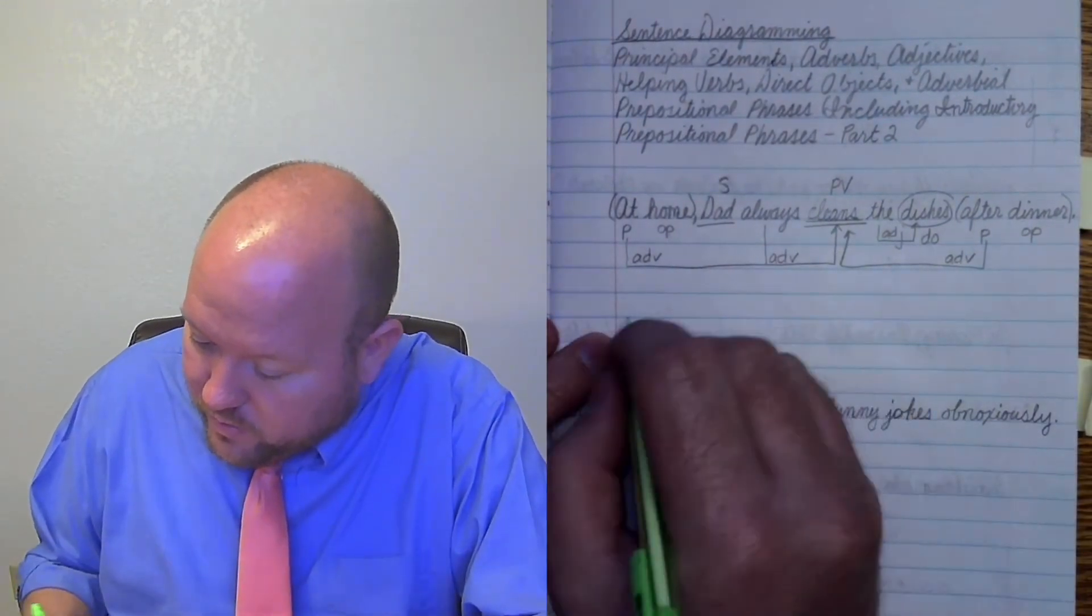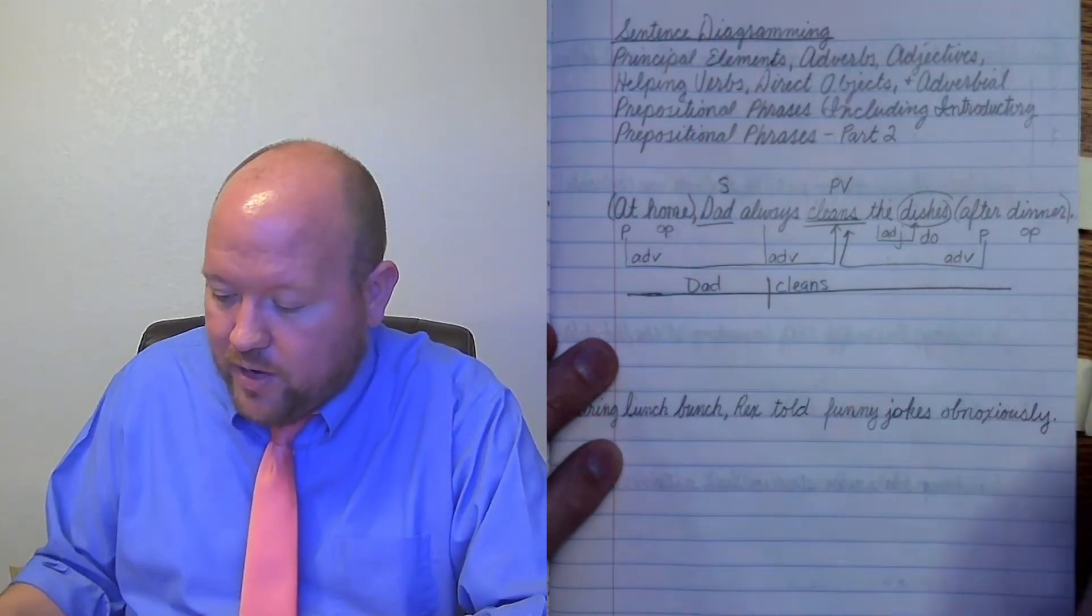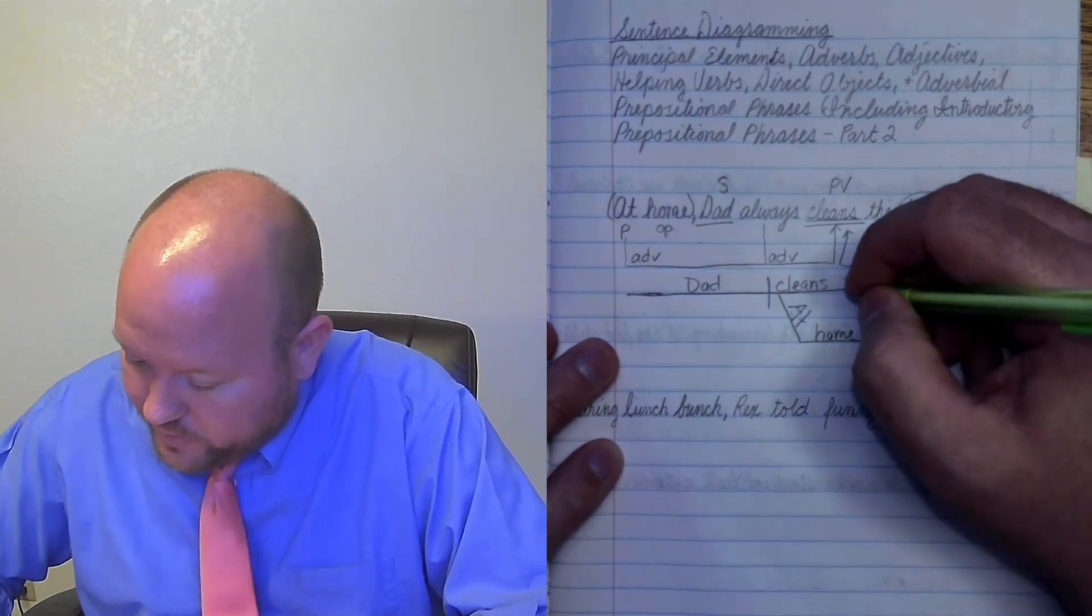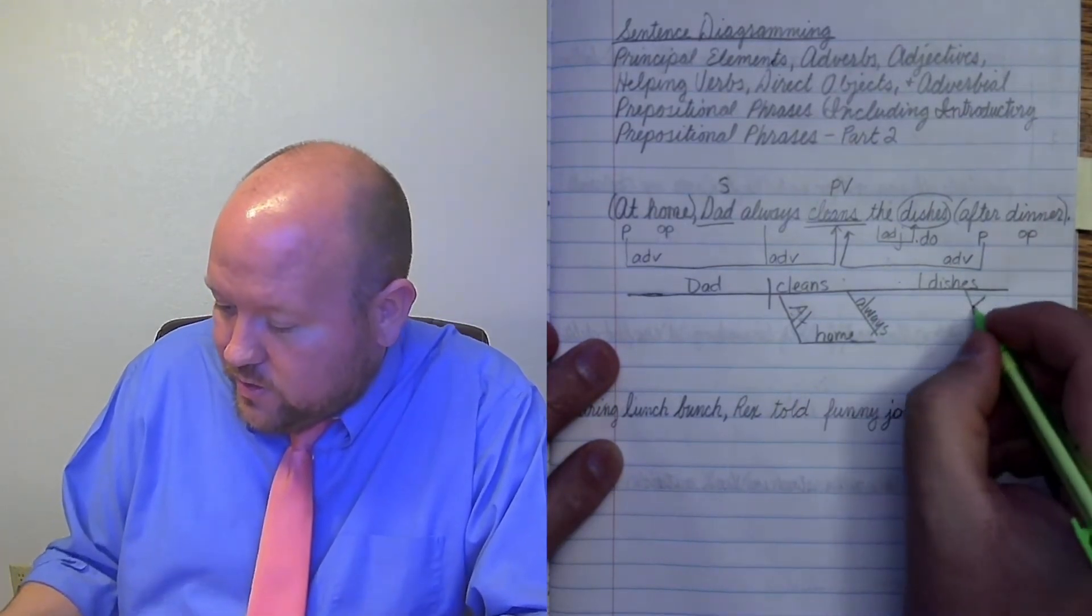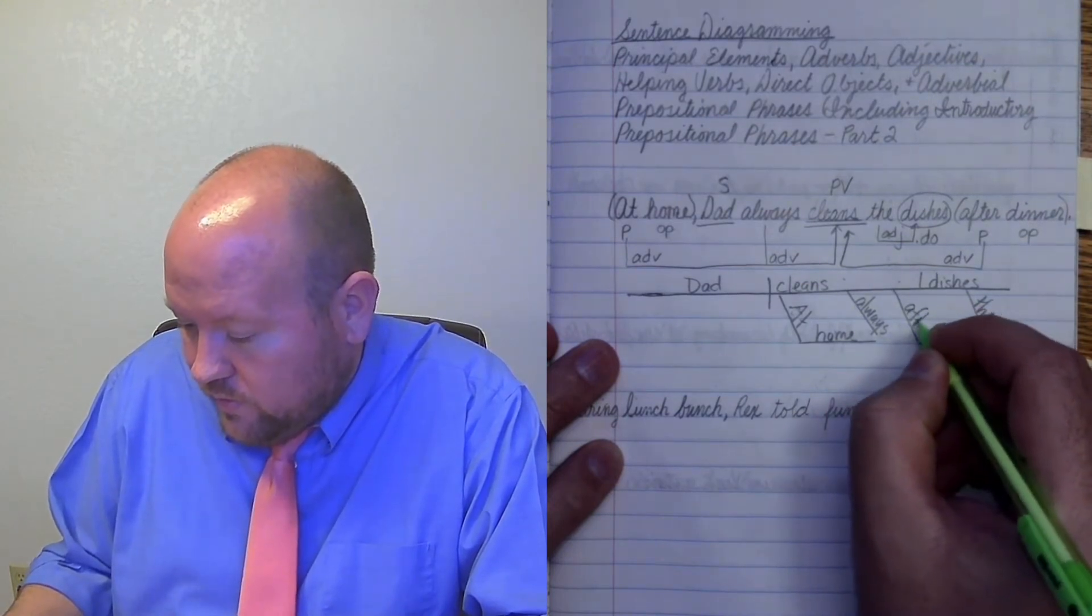Now let's diagram this. So I'm going to go right here just so I have plenty of space to make my diagram. Going to put my line here. So here we have cleans is the verb. Dad is the subject. Dad's capitalized because I'm using it as a proper noun and he cleans what dishes. At home is where he does it. So I'm going to put at home and it needs to be capitalized because it's capitalized in my sentence at home. Dad always. So he always does the dishes. So I'm gonna do this here, but always. Which dishes? The dishes. And when does he do it? After dinner. After dinner.